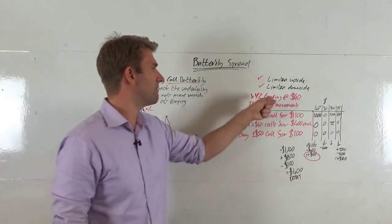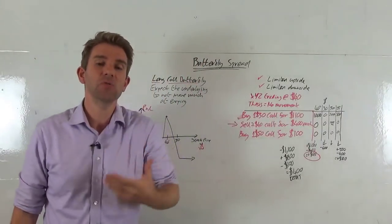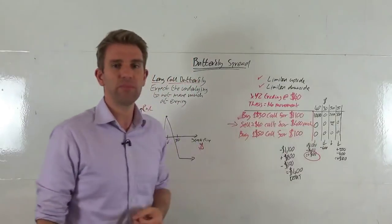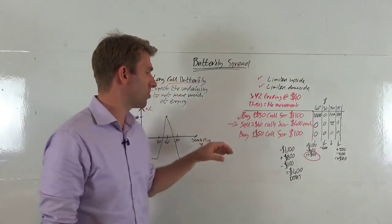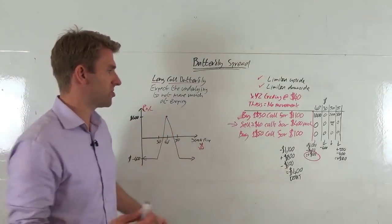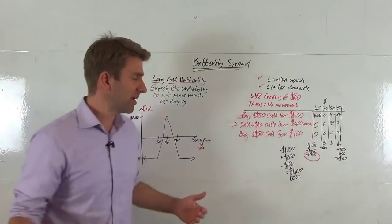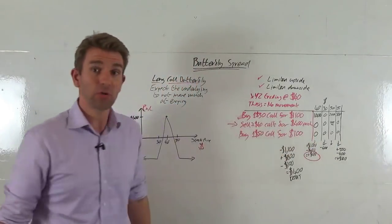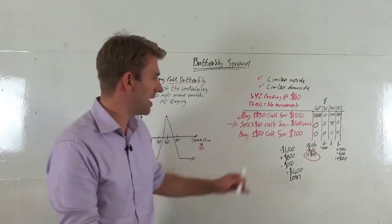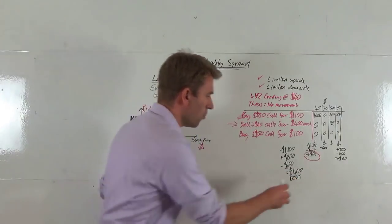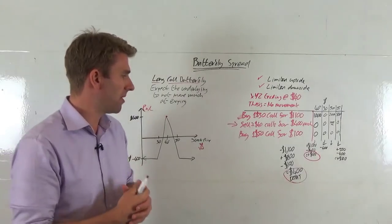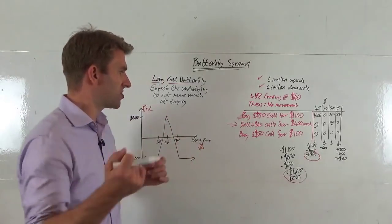Why is that $30 call so expensive? Because it's an in-the-money call option — we're currently trading at $40, so this $30 call already has $10 of intrinsic value times 100 shares, plus $1 of premium, making it $1,100. We also buy one $50 call, which has $1 of premium, costing $100. So the net cost: we pay $1,100 for the $30 call, receive $800 for the two $40 calls we sold, and pay $100 for the $50 call. That's a $400 debit — it costs us $400 to enter this trade.